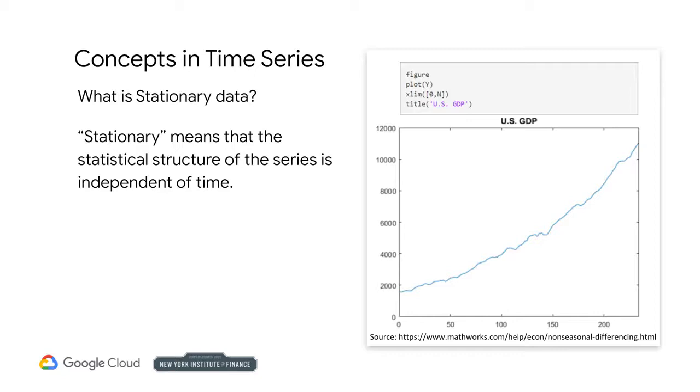The problem we have with financial data is that the mean may change over time, or the standard deviation may change over time. Either of these violations mean one thing: the series is not stationary. For example, this graph is upward trending and has an increasing mean. This is not stationary. Previously you learned that you could take the first difference of a series, and this new different series may be stationary.